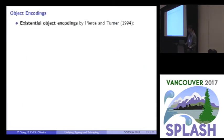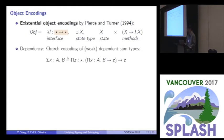To do the object encoding, we use the approach called existential object encodings by Pierce and Turner in 1994. So, here is the encoding. The OBJ here is a type-level function. It takes a parameter interface, which requires hierarchy star to star, and it returns an existential type. The existential type, the quantifier, is X, which is the state type. The body is the state with the methods.